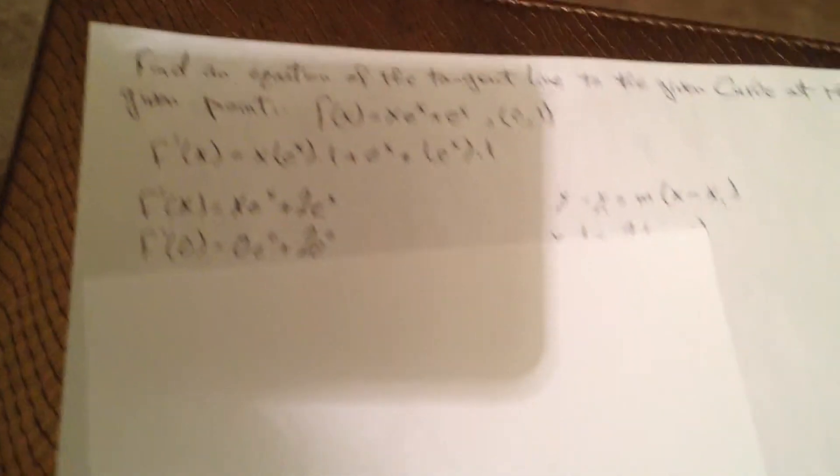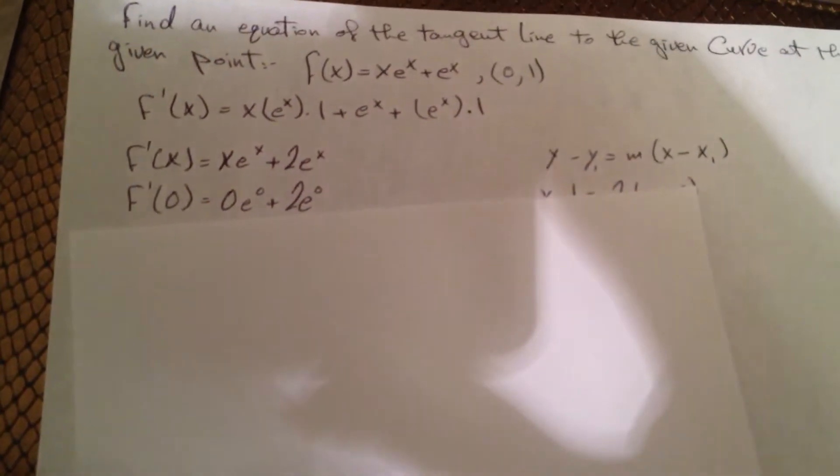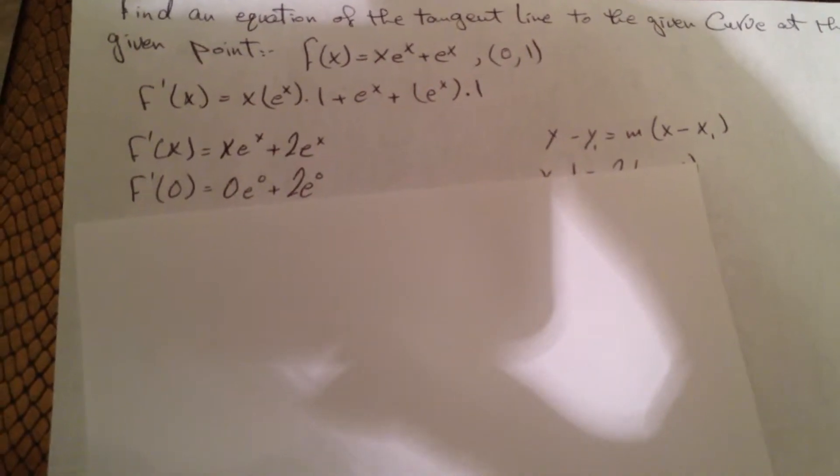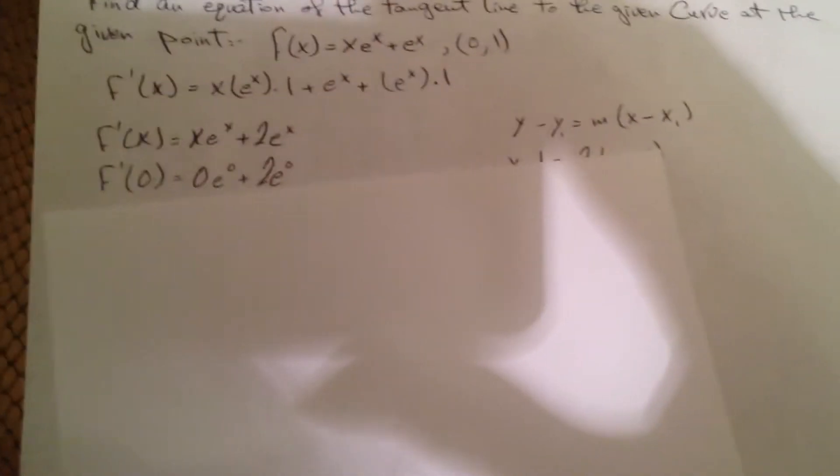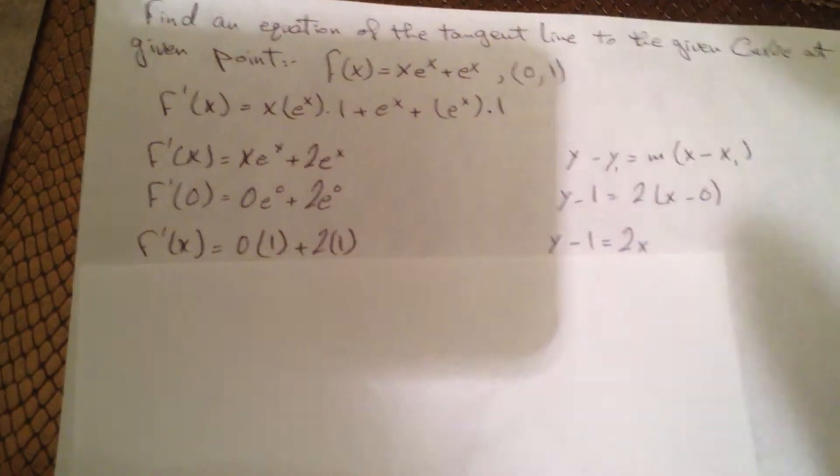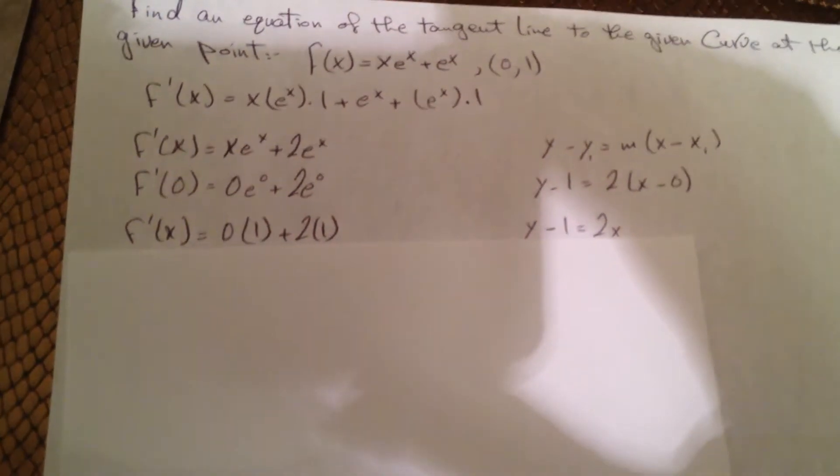I will plug in 0 for x. So I have 0e^0 plus 2e^0, which equals 0 times 1 plus 2 times 1. So f'(0) equals 2.